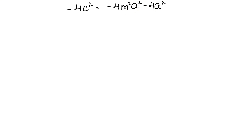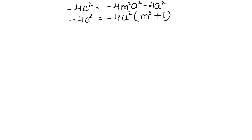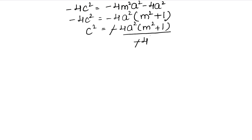So: minus 4c² = minus 4a² common, that is minus 4a²(m² + 1). This 4c² with minus was on one side, so now minus to minus cancel, and 4 to 4 cancel. This was the multiplication of these two — if there was a bracket sign, I couldn't do it.